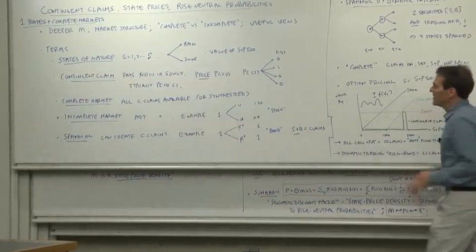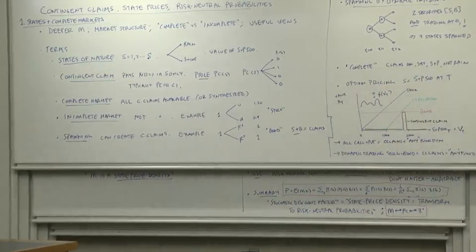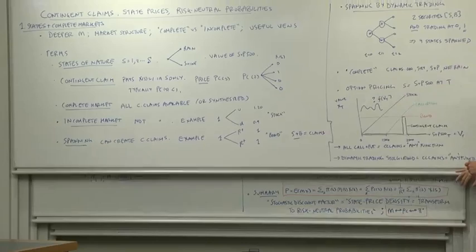Spanning can also happen, not just by the number of securities equaling the number of states. You can see, obviously, a sort of linear independence that you need. But you can have spanning by dynamic trading as well.